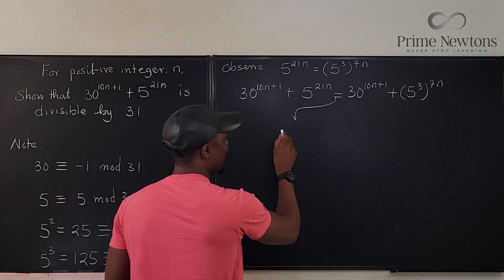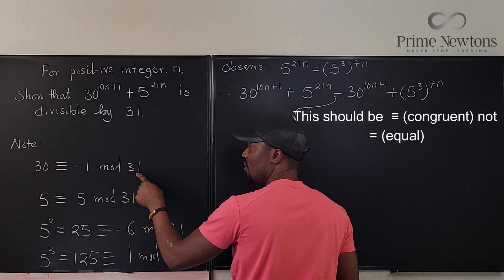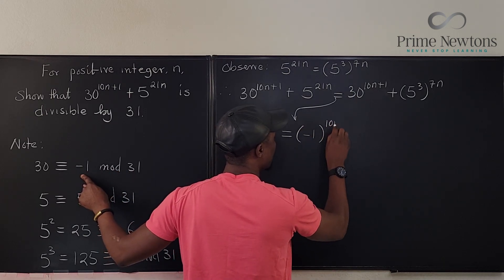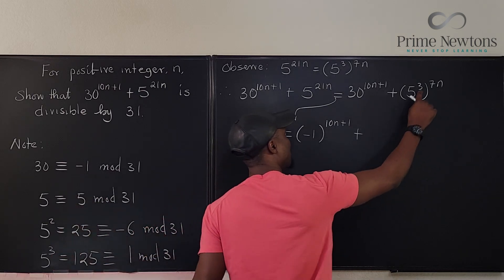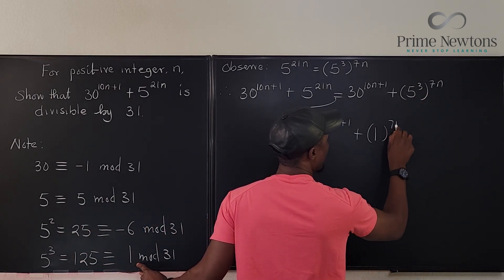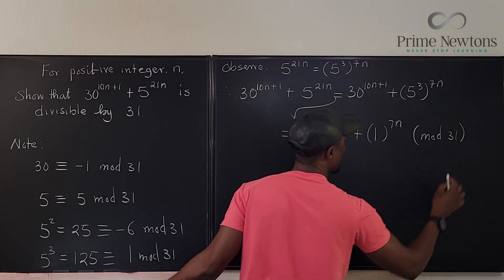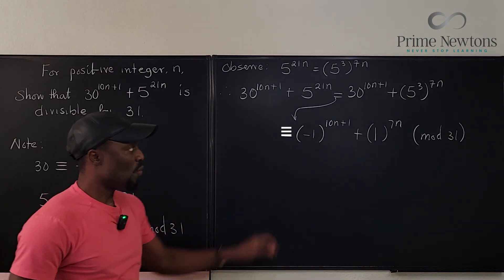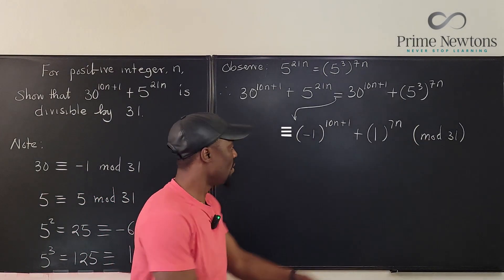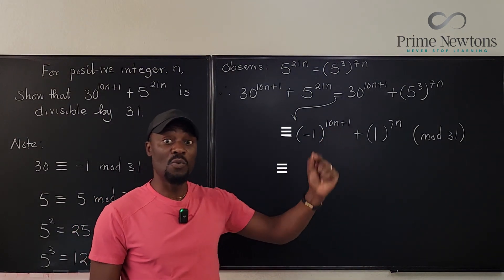So now let me pull this here. So what we have is that this is now equal to, instead of writing 30, we're going to be writing mod 31. So this is now (-1)^(10n+1) plus, instead of writing 5 cubed, we're going to be writing 1 raised to 7n. Everything is now mod 31. Let me put this in parenthesis here. So what you have written is in mod 31 or is mod 31.